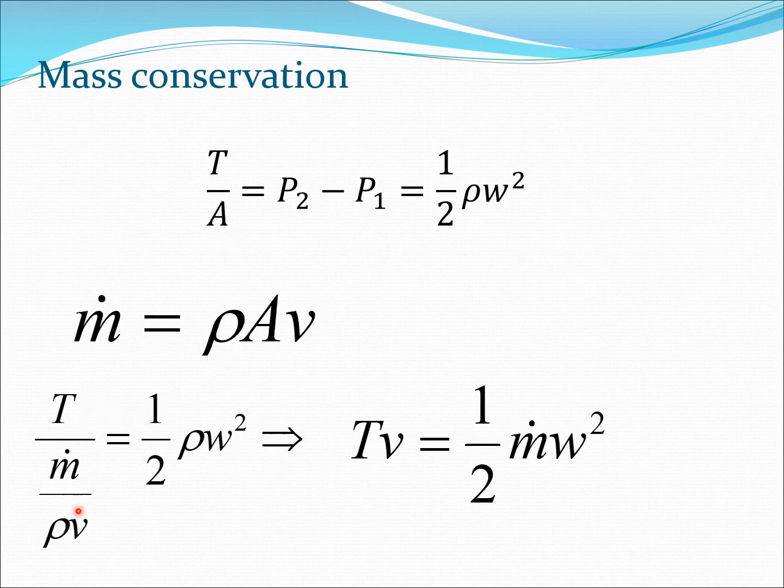T/A becomes T/(ṁ/ρv), and this is going to be equal to 1/2 ρw². From this I can then write Tv = 1/2 ṁw², because this ρ went up and got cancelled here, and the v went up and remained. So this is the equation we get.